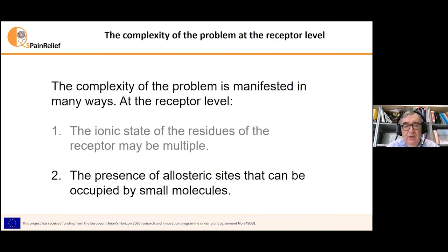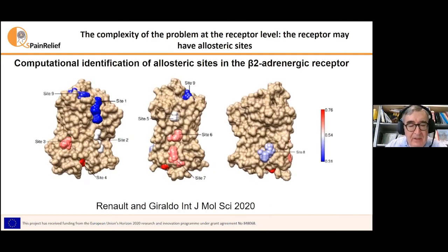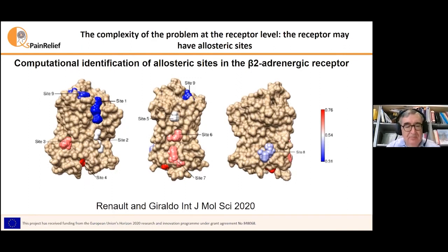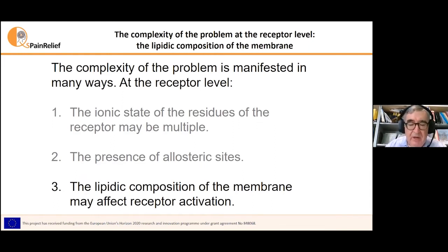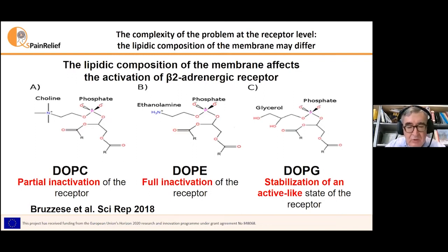Another component of the global complexity is the presence of allosteric sites in the receptor structure that can be occupied by small molecules. In a paper that we published recently, we showed the computational identification of allosteric sites that are correlated with activation of the receptor — this was done for the beta-2 adrenergic receptor. Another issue is the lipid composition of the membrane, which can affect the activation of the receptor. Using again the beta-2 adrenergic receptor, we showed that lipids can stabilize either the inactive or the active state of the receptor, so being part of the activation and the function of the receptor.